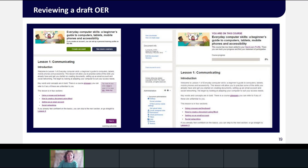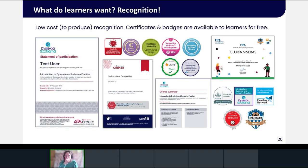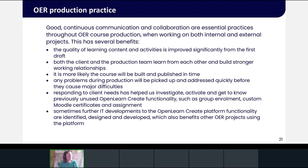We've trained quite a few people in the team to do this now. During the final quality assurance checks, if required, the digital badge, statement of participation, or custom Moodle certificate is set up by the senior producer or a senior project manager as part of the activity and course completion settings configuration. The platform offers all three options — statement of participation, digital badges, and more recently custom Moodle certificates, as you can see in the examples shown here.